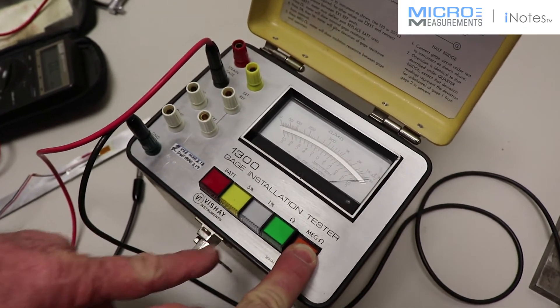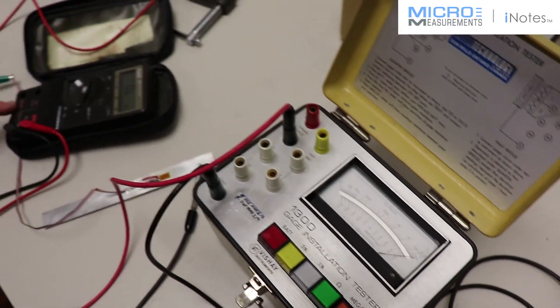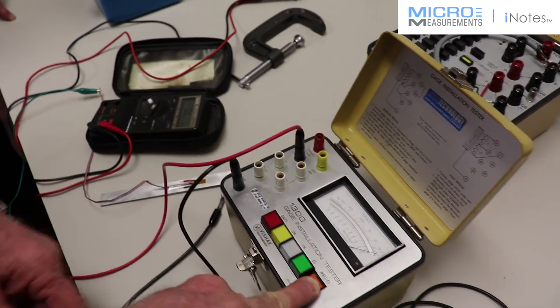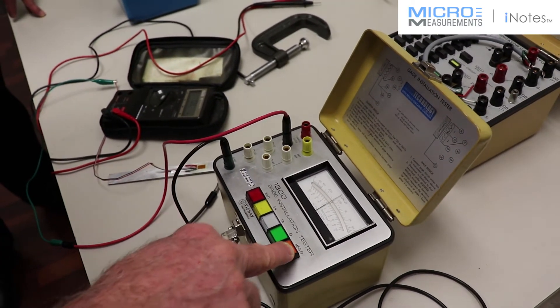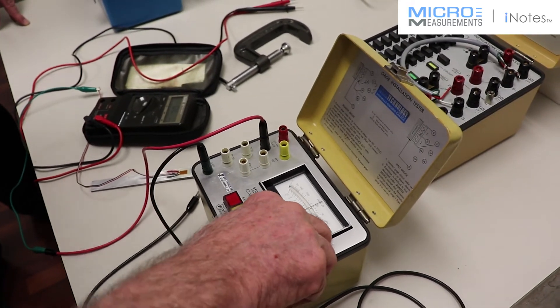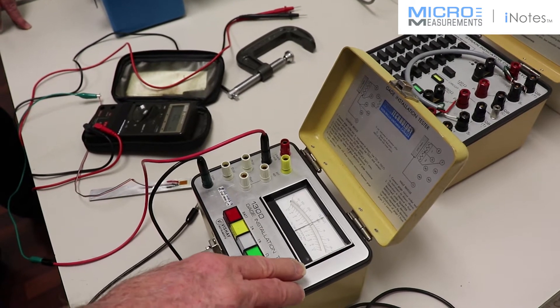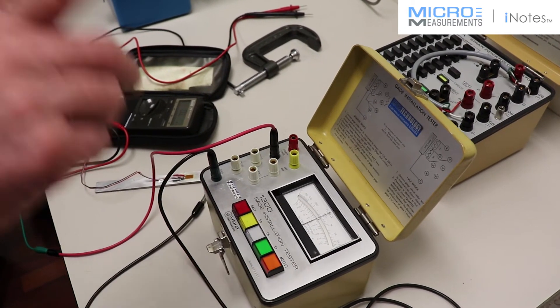But the difference between this meter and the general meter that you buy from the hardware store is that here we are reading a value which at full scale is equal to 20 gig ohm, which is 20 times 10 to the 9 ohms. But more importantly...